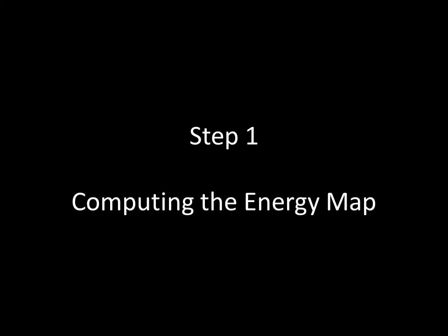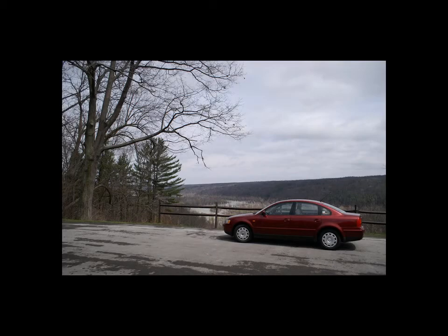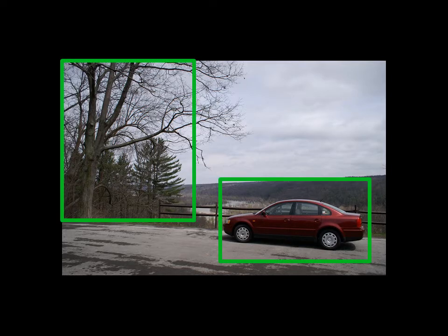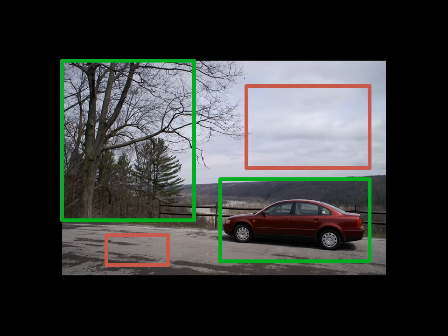The first step in the seam carving algorithm is computing the energy map. Here's an example of an image that we would want an energy map for. The goal of finding an energy map is to identify areas in a scene that have a lot of information that we don't want to change. In this scene, we don't want to change the car, because that's important, and we don't want to change the trees. Areas that we don't really care about are the sky and the pavement.